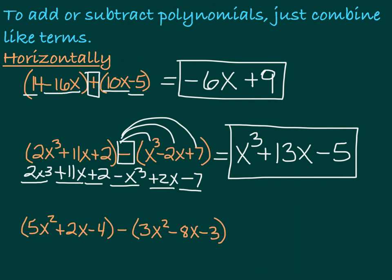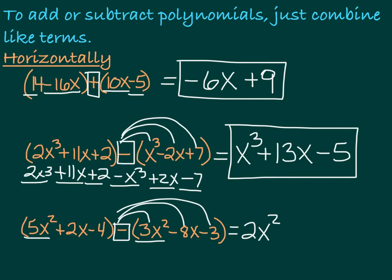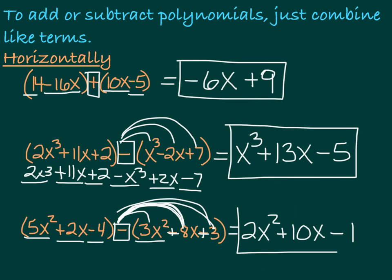Here's another example of subtraction. Make sure you distribute your minus sign here, here, and here. So if I've got 5x squared minus 3x squared, I have 2x squared. Then I've got positive 2x and minus negative 8x — minus negative becomes plus — and 2 and 8 is 10x. And then I have minus 4, and minus minus 3 becomes plus 3, so negative 4 plus 3 is negative 1. Be very careful with those negatives — I'm going to put that on the test.